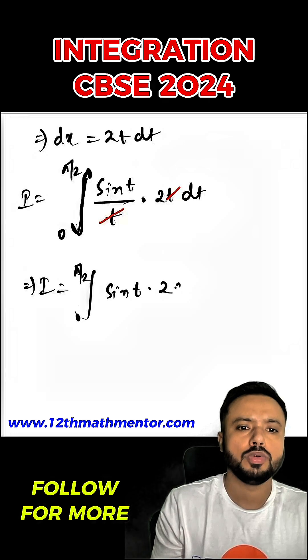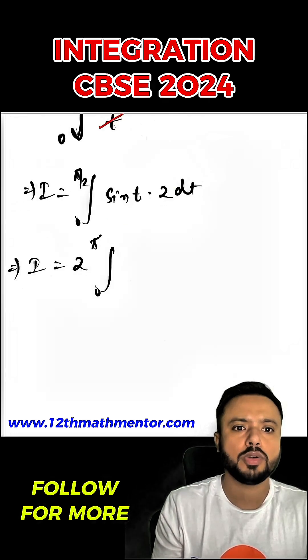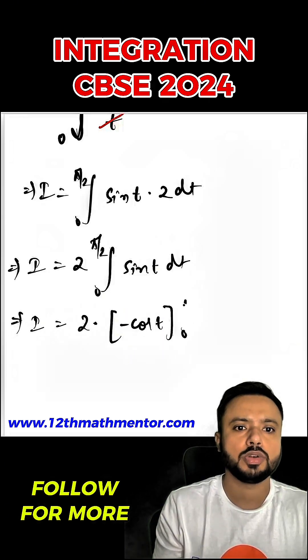I equals to 2, 0 to pi upon 2 sine t dt. Now integral of sine t is minus cos t, so 2 into minus cos t from 0 to pi upon 2.